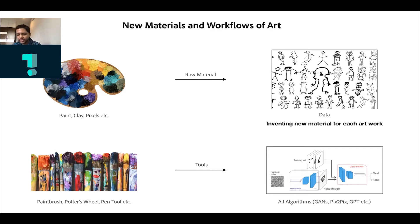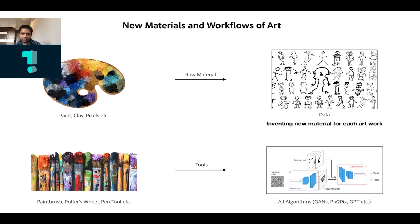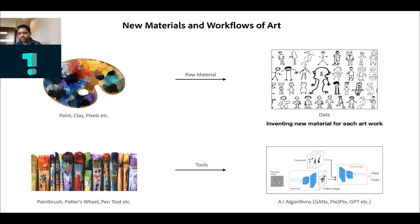This captures what I feel is an analogy of traditional art to this new AI way of making art. Traditionally, artists would make their paints, mold their clays, and manipulate pixels as raw materials. Whereas today the raw material is data, and you manipulate it through AI algorithms the way you previously used a paintbrush. With traditional art, once you've created a paint you could use it in various ways, but with AI art you're often creating a new material — a new data set — for each artwork.